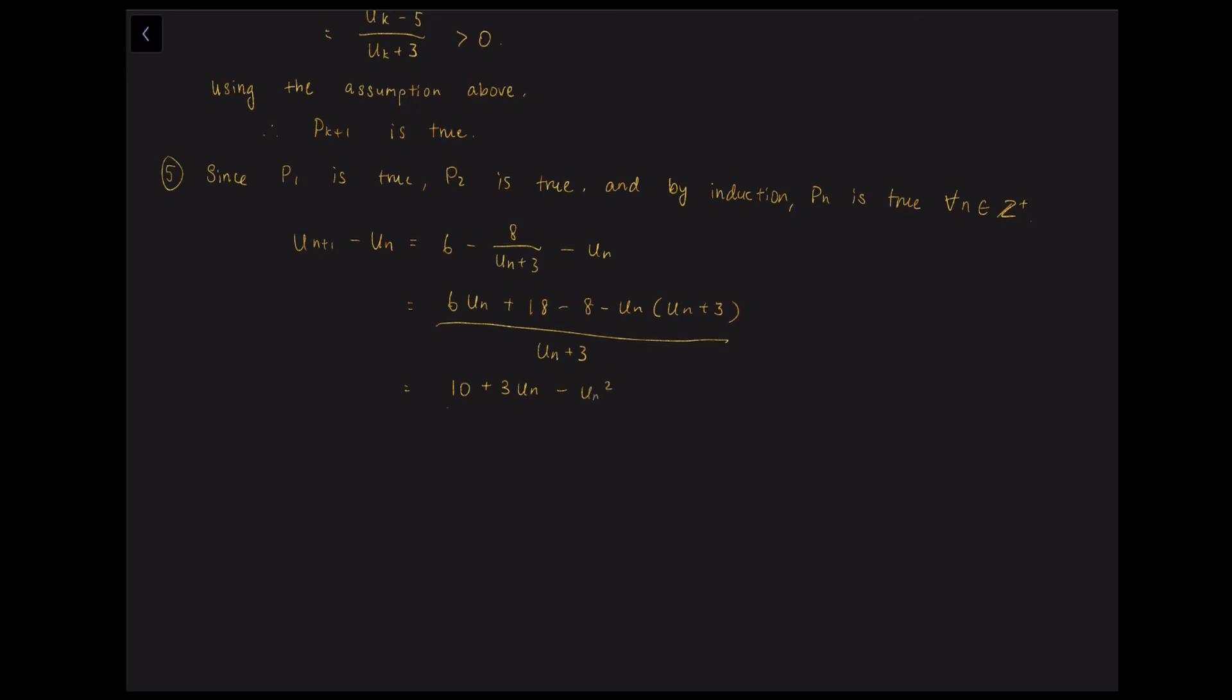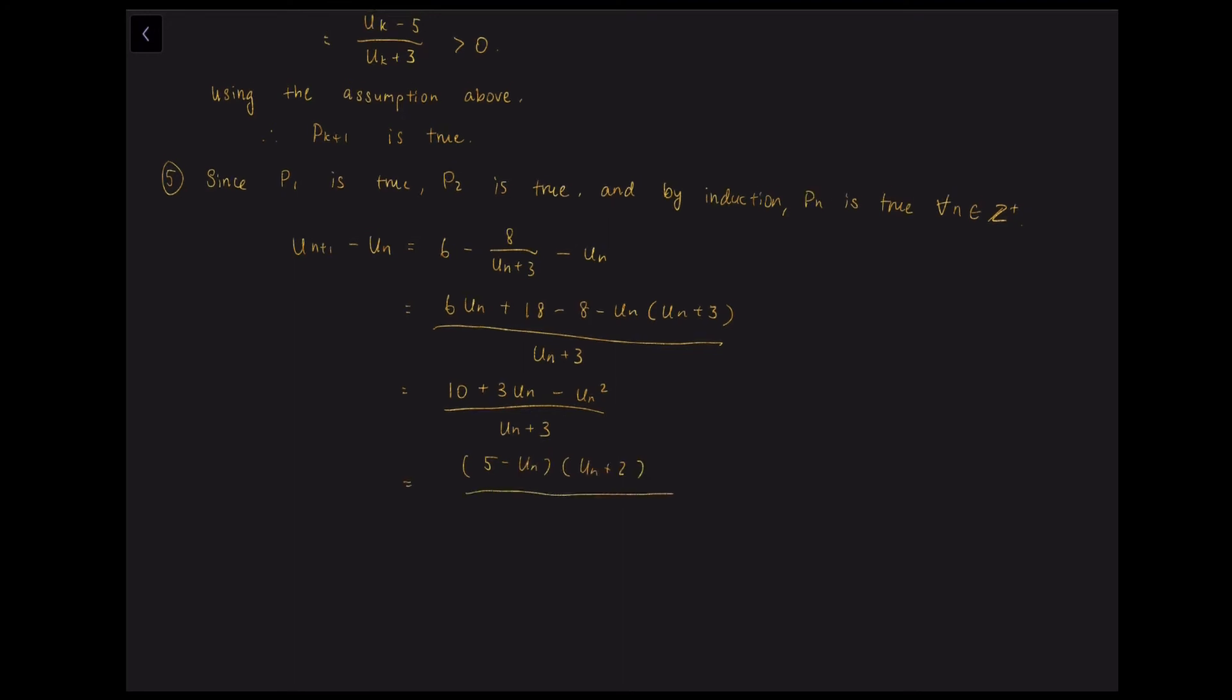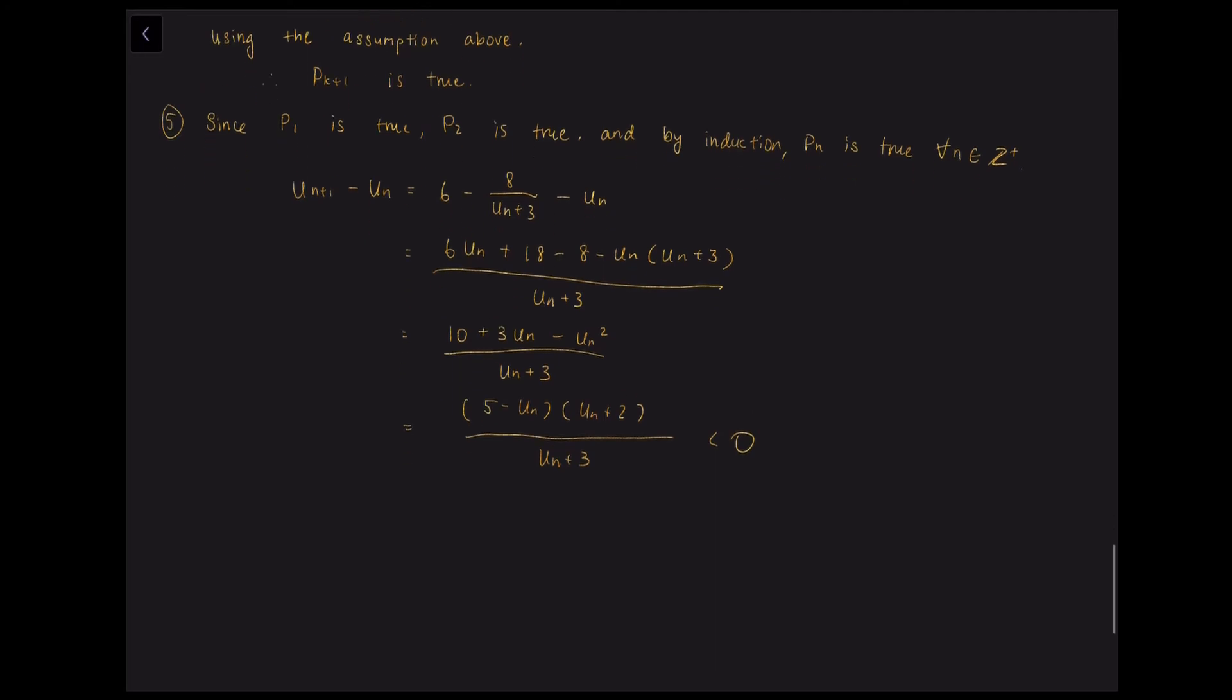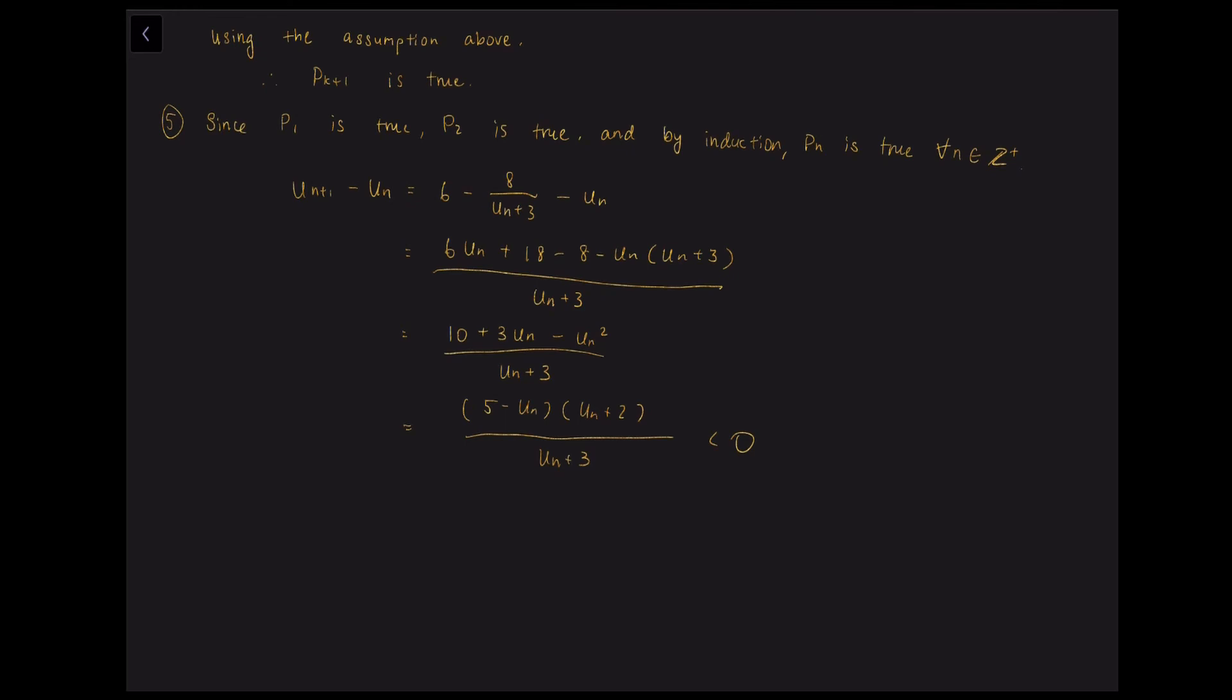And the quadratic equation can be factored. And we have 5 minus un times un plus 2 over un plus 3. And we know that un must be bigger than 5. So 5 minus something bigger than 5, it must be a negative value. And the rest remain positive. So we have a negative times positive divided by positive. And so we know that this fraction is a negative number.